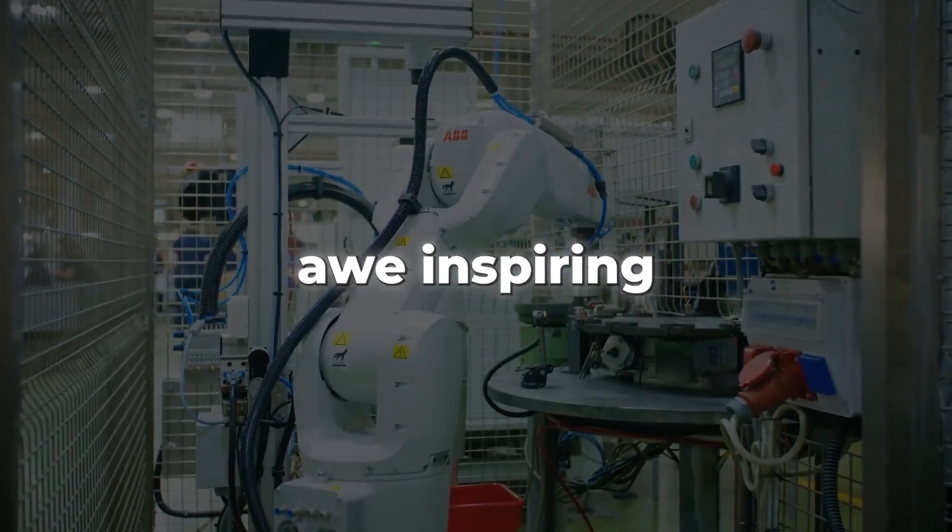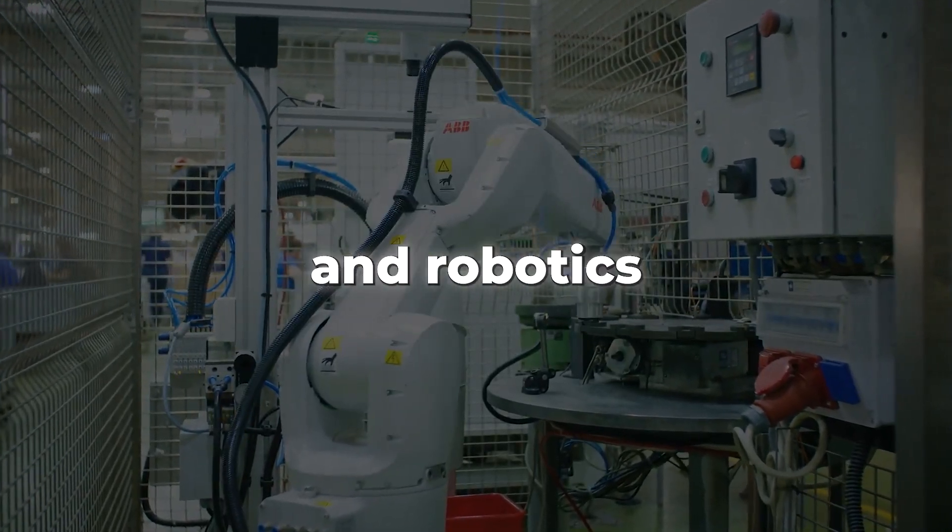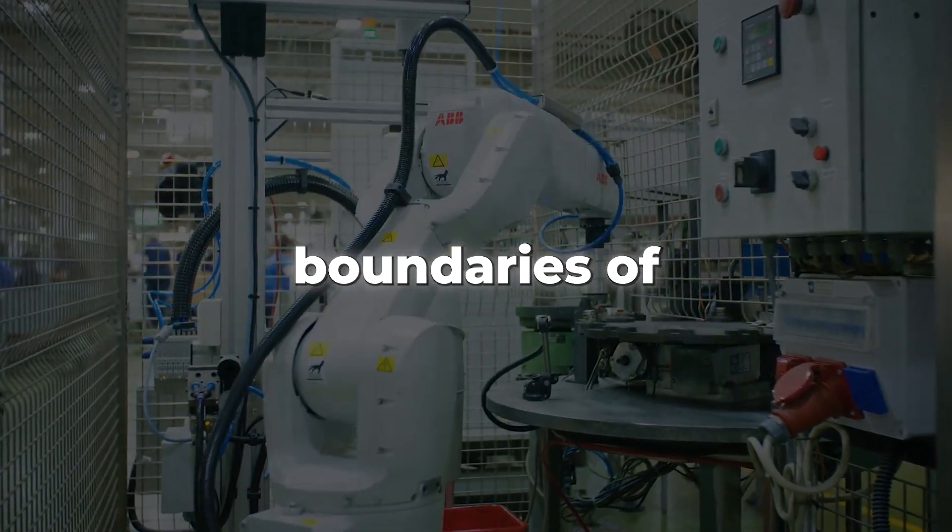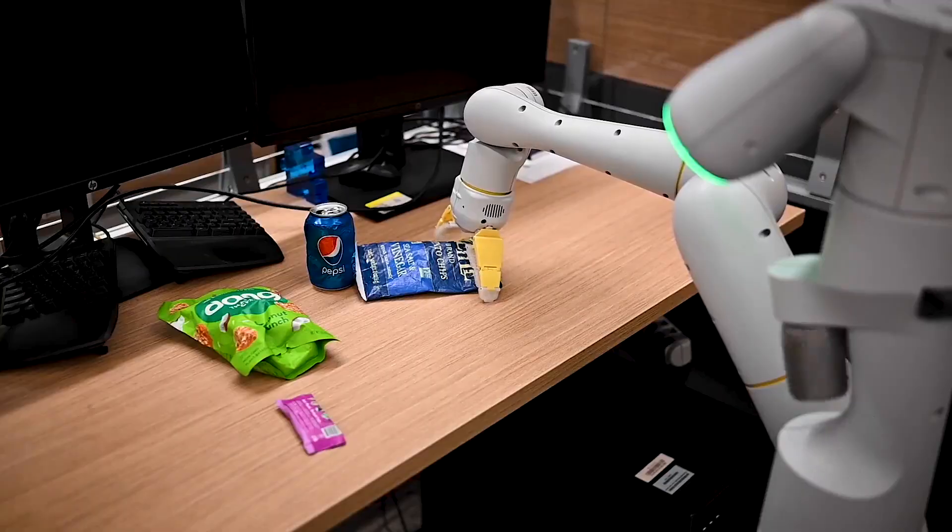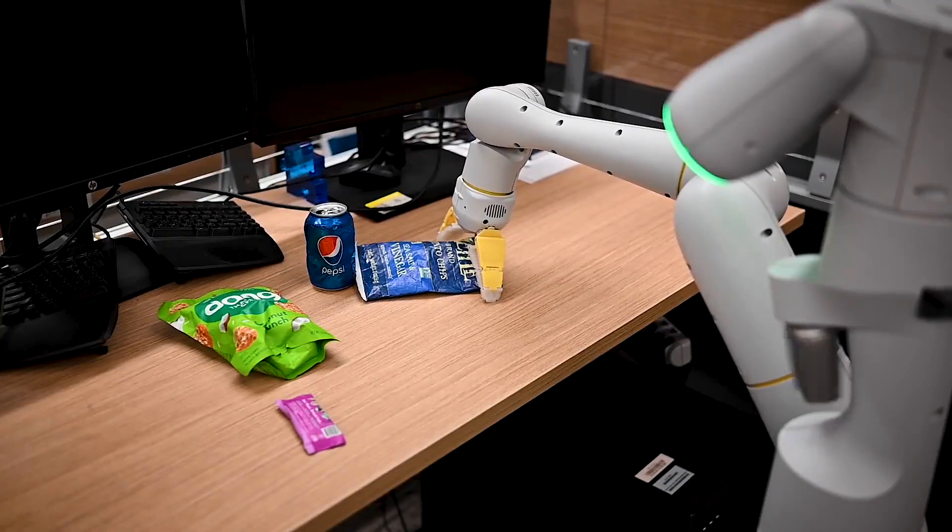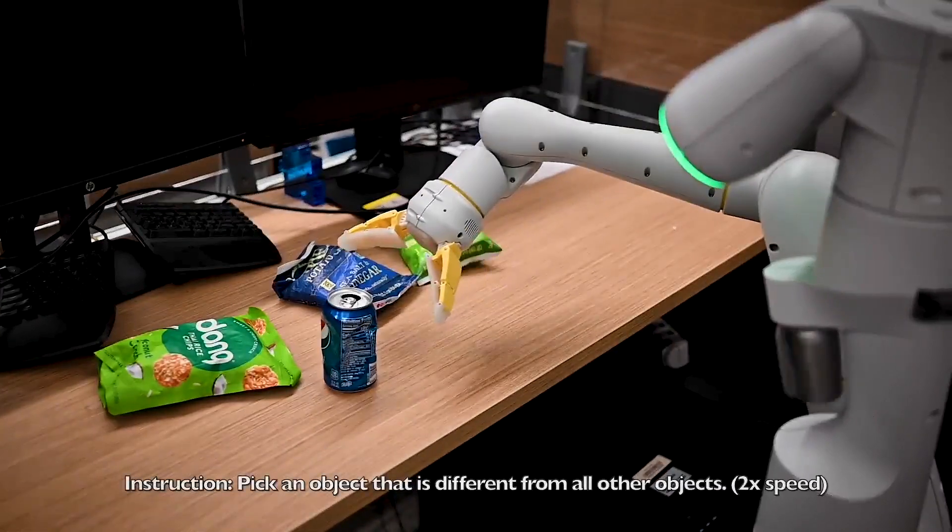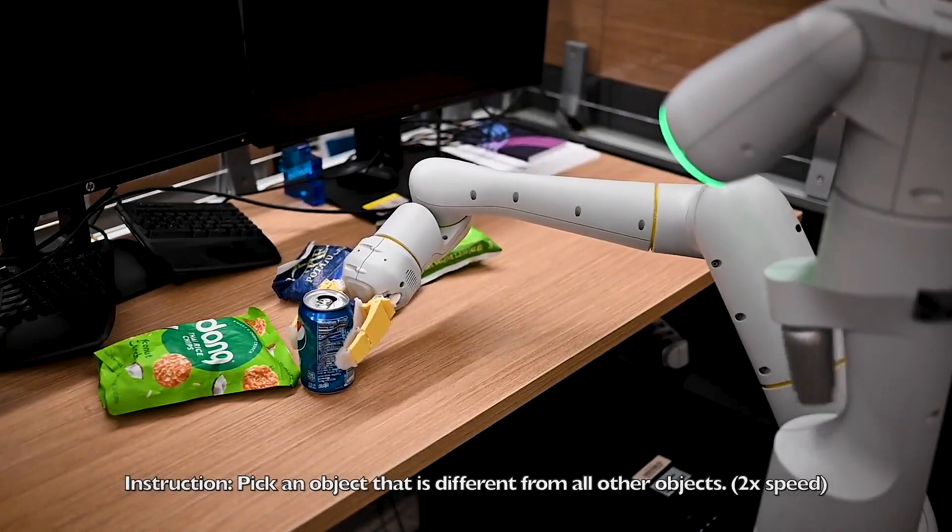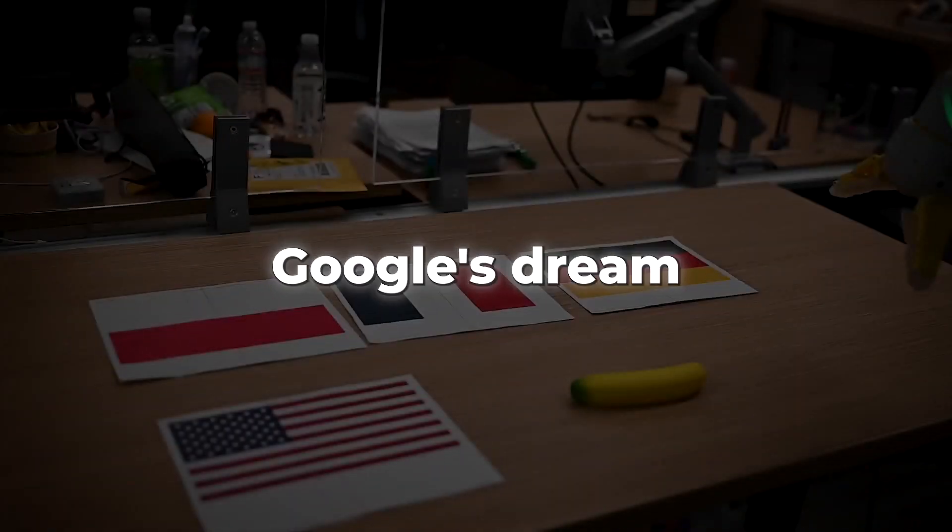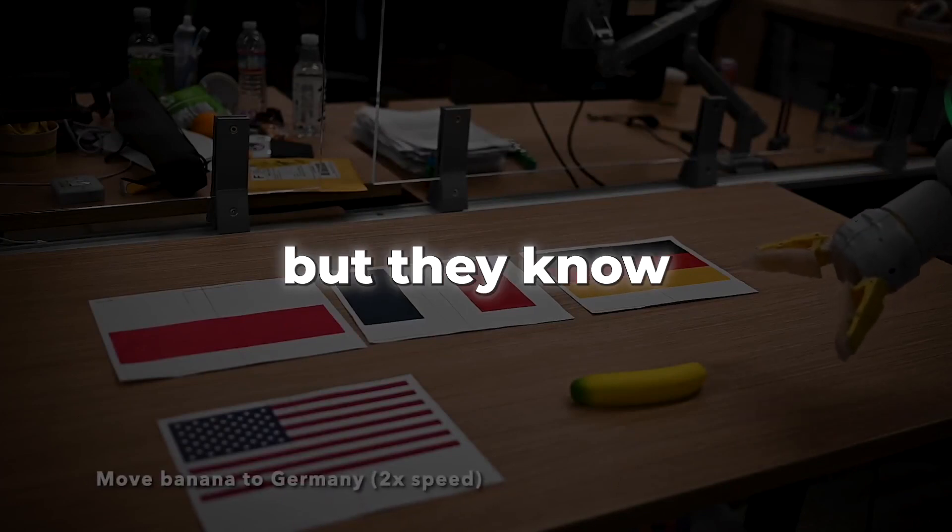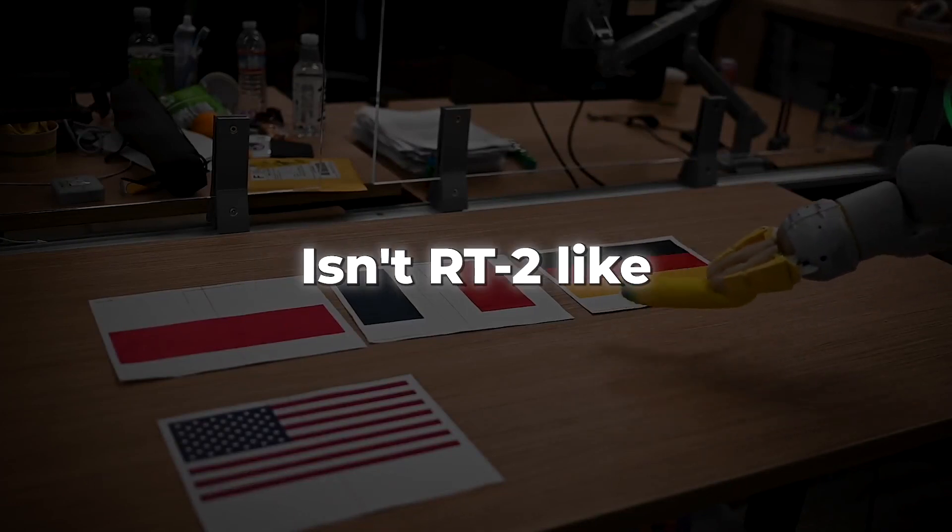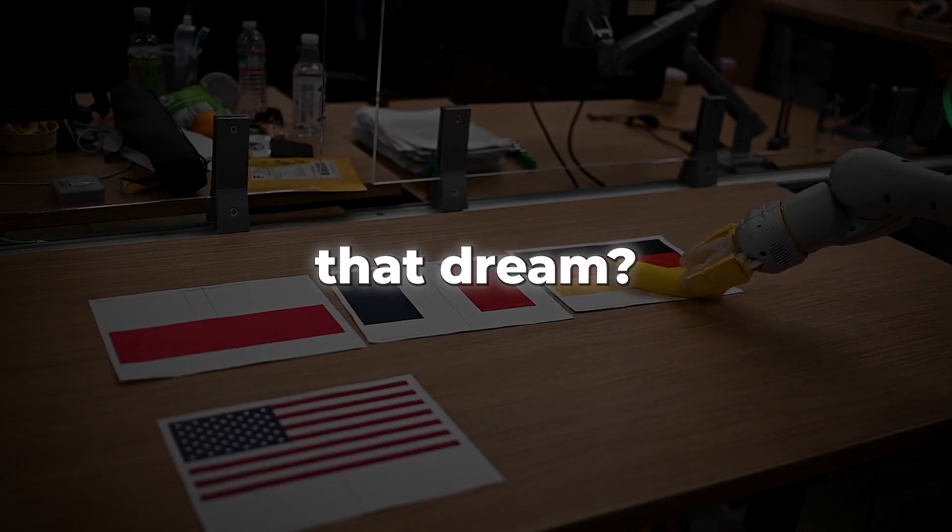RT2 is an awe-inspiring example of the fusion of AI and robotics, pushing the boundaries of what machines can achieve. Its ability to adapt, learn and perform with astonishing precision makes it a trailblazer in the realm of intelligent robotic systems. Google's dream is to create all-round robots, but they know there's still a long road ahead. Isn't RT2 a mighty step forward for that dream?